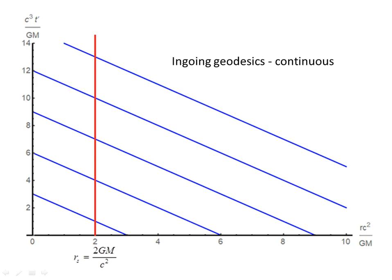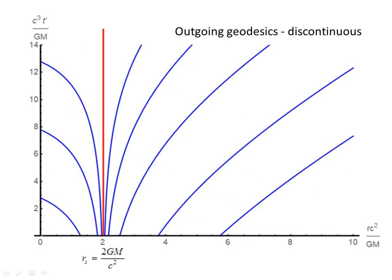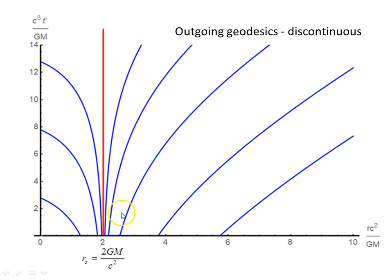For the outgoing geodesics, they are still discontinuous at the Schwarzschild radius — we have the outgoing geodesics outside the Schwarzschild radius, and then separately within the Schwarzschild radius.